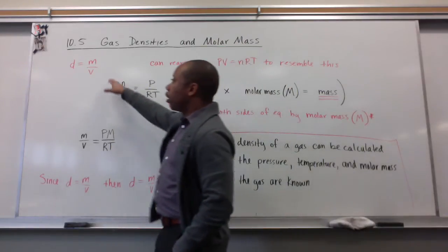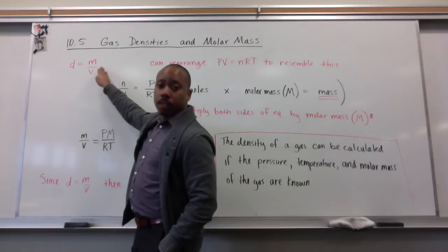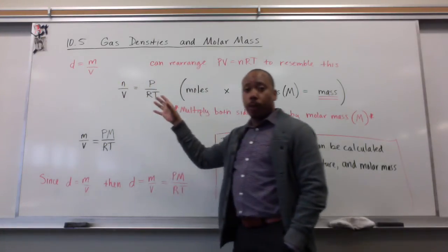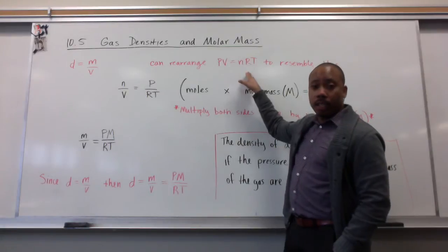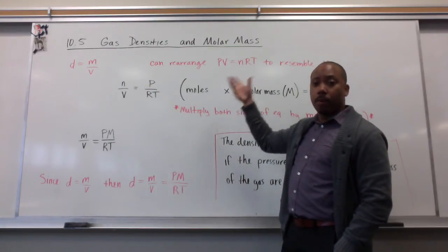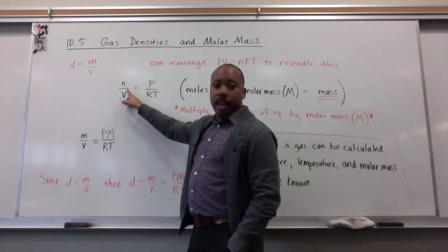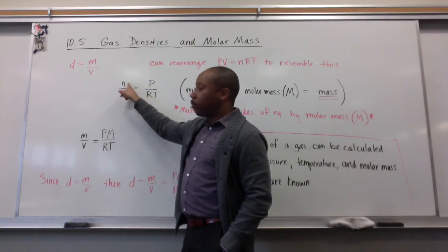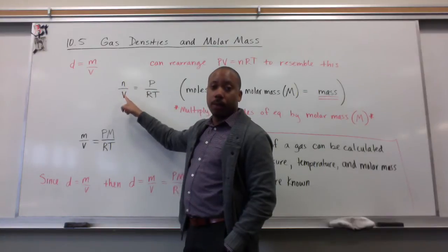We know that density is equal to the mass of an object divided by the volume. We can take our ideal gas law equation, PV equals nRT, and rearrange it to kind of resemble this. We can rearrange it to n over V equals P over RT. This is still some number of moles of a substance divided by the volume.